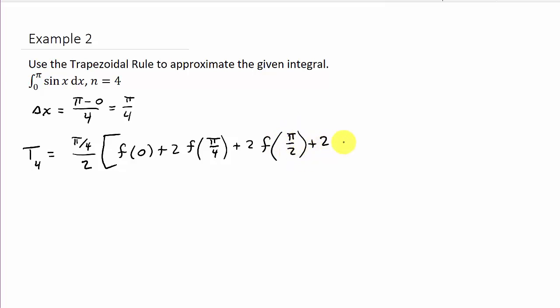Plus 2 times f of, now remember this was 2π over 4, and we reduced it. If we add π over 4 to this, that's going to leave us with 3π over 4. Plus, and then add π over 4 here, that's going to give us 4π over 4, which is π, and we've reached our upper limit, so that's just f(π).